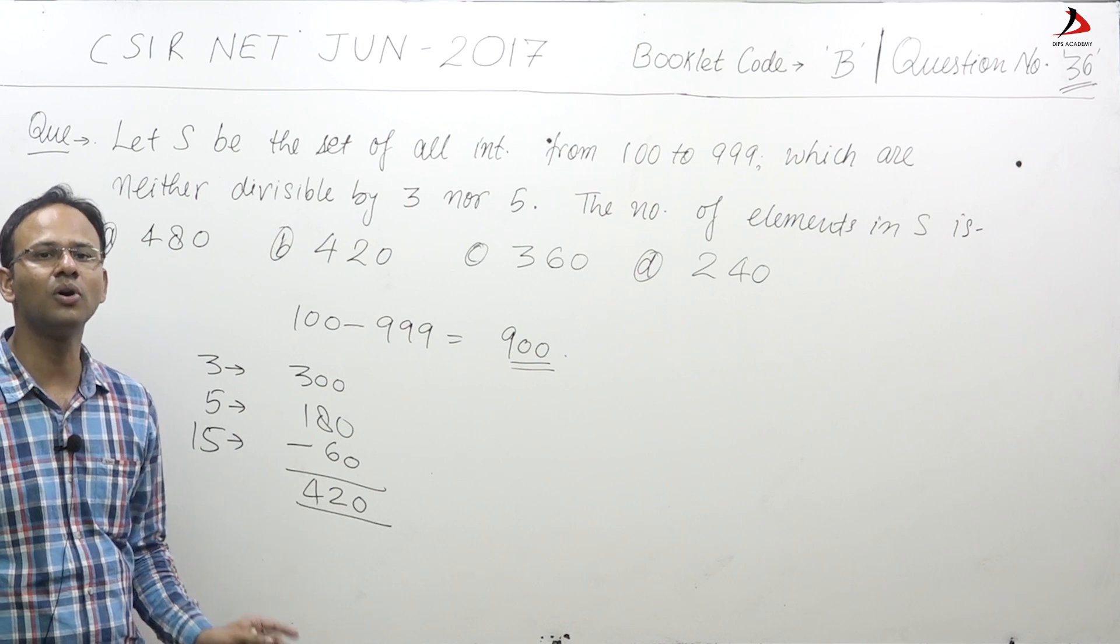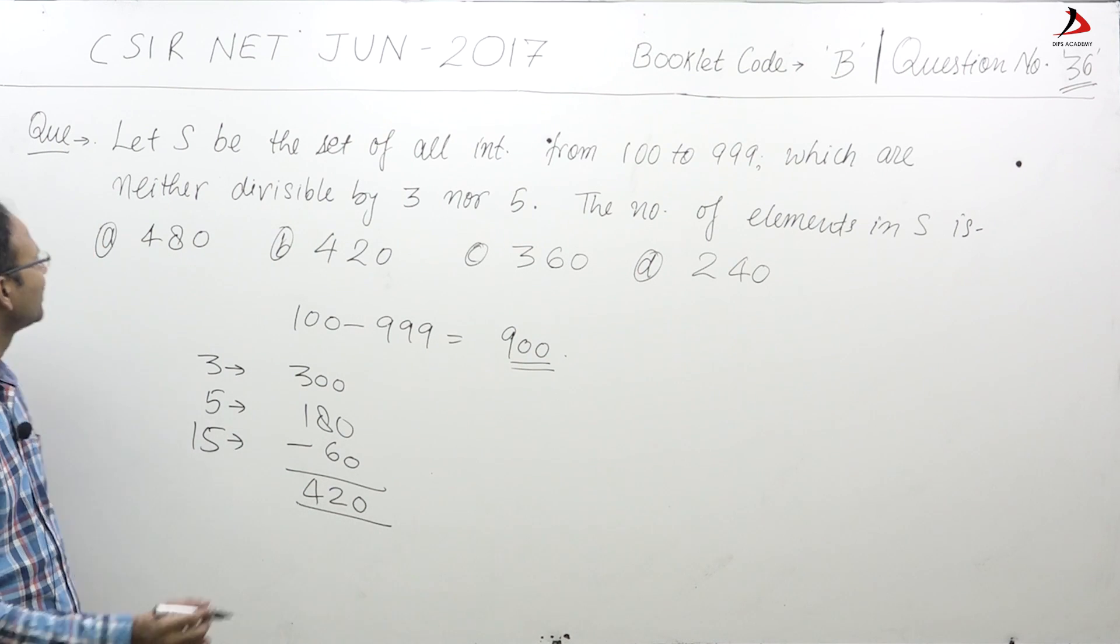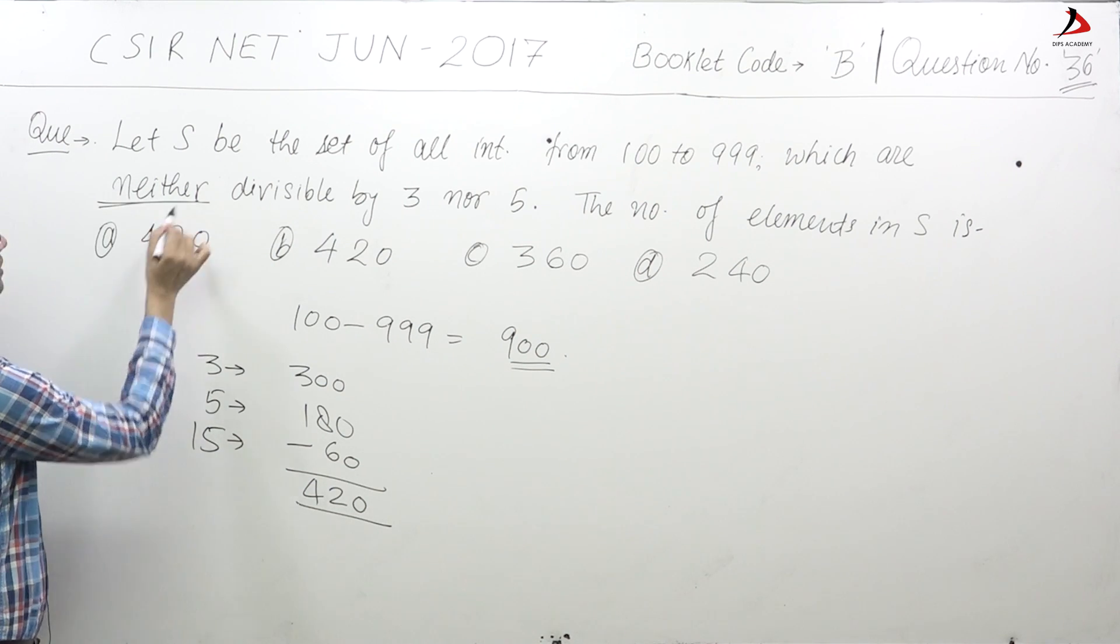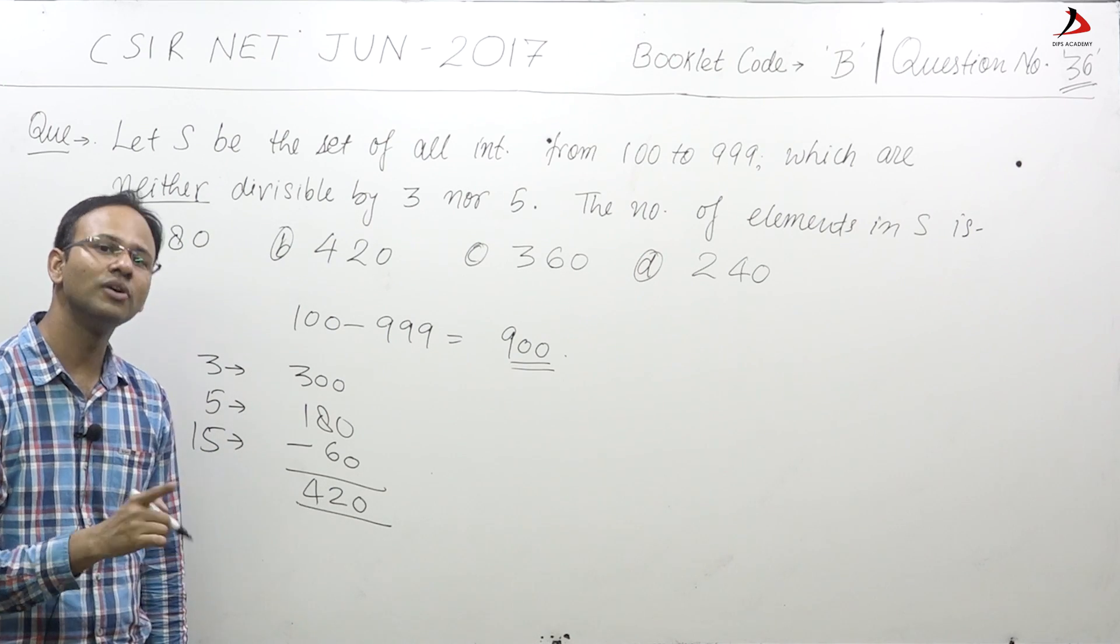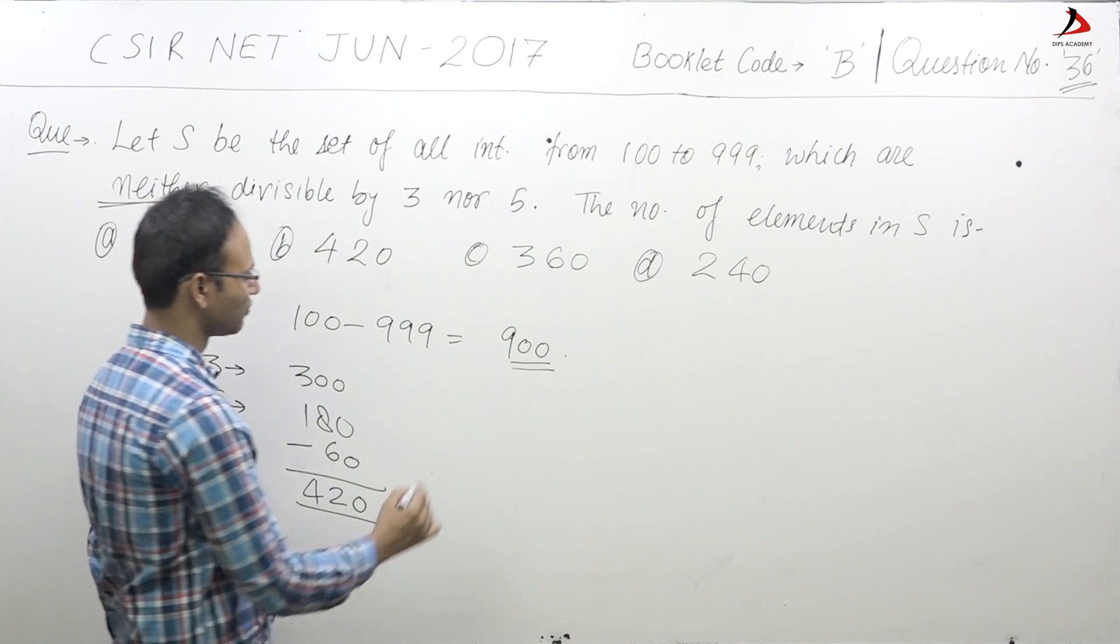But in this question, they are asking: find out the numbers which are neither the multiple of 3 or 5. So what we need to do is subtract 420 from 900.